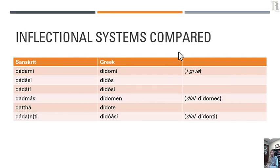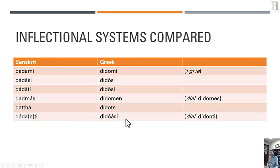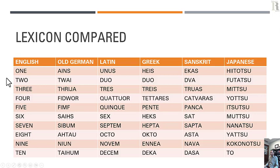Another comparison shows the inflectional systems for the word 'I give' between Sanskrit and ancient Greek. Sanskrit 'dadami,' Greek 'didomi.' Sanskrit 'dadasi,' Greek 'didos.' Sanskrit 'dadati,' Greek 'didosi.' Sanskrit 'dadmas,' Greek 'didomen.' Sanskrit 'dadha,' Greek 'didote.' Sanskrit 'dadanti,' Greek 'didoasi.' There's obviously a connection between these two languages.